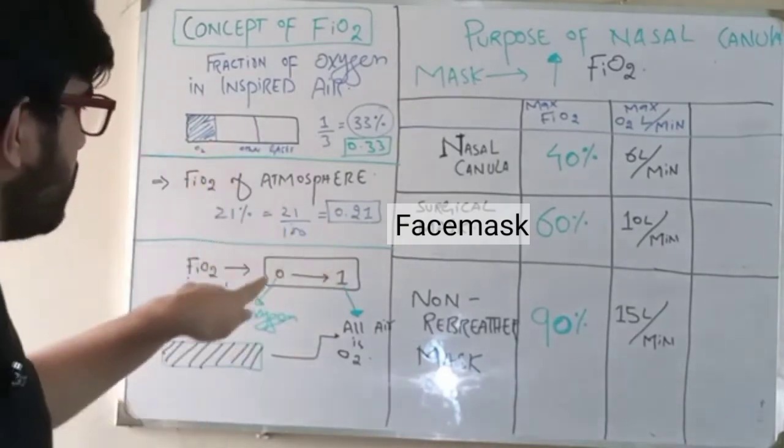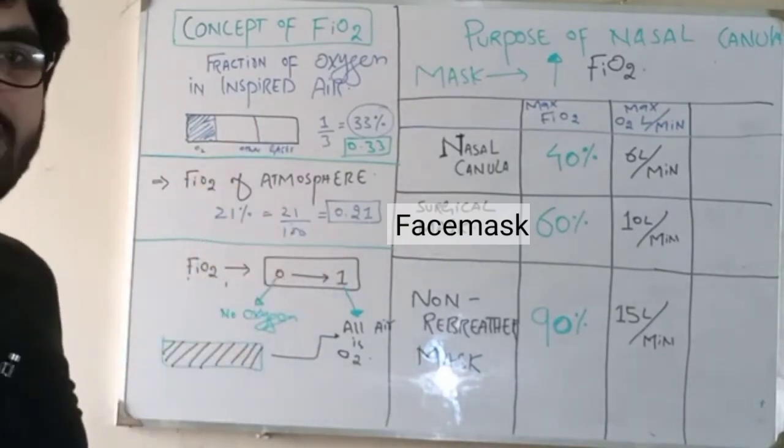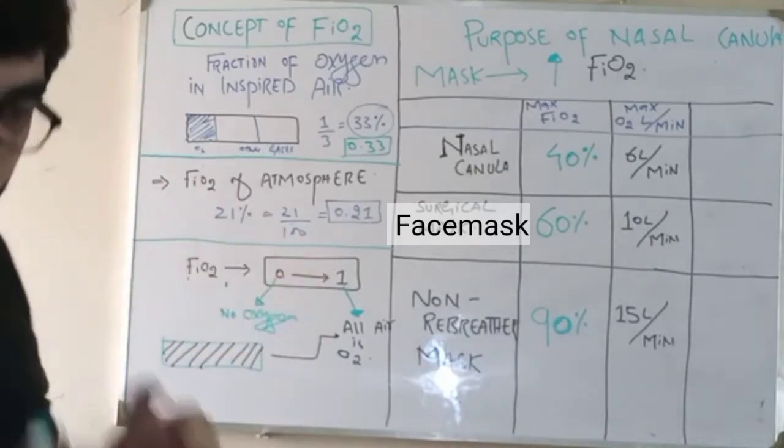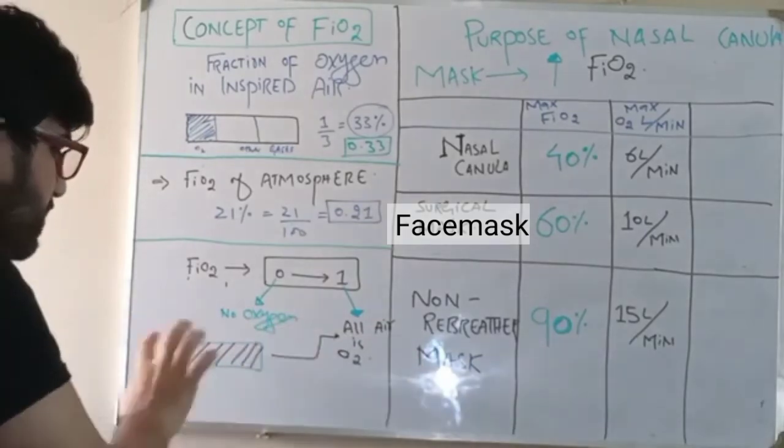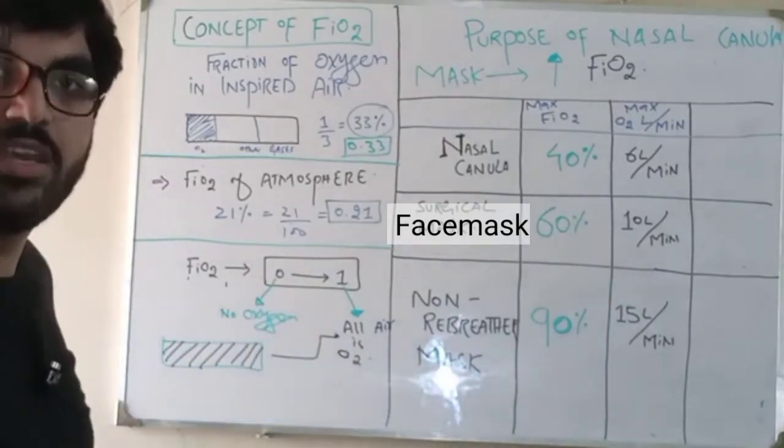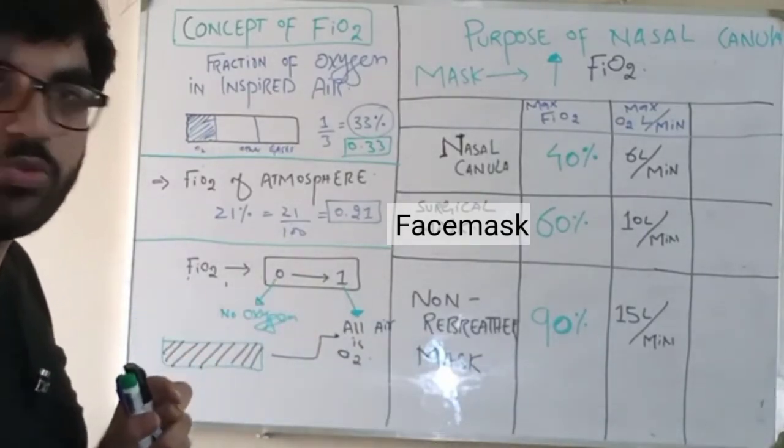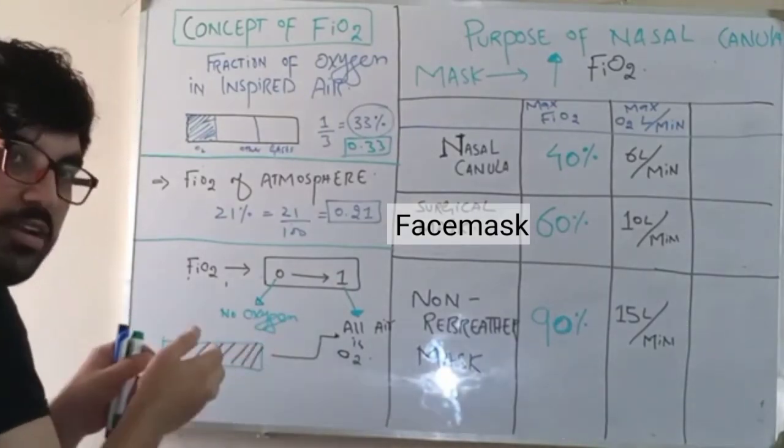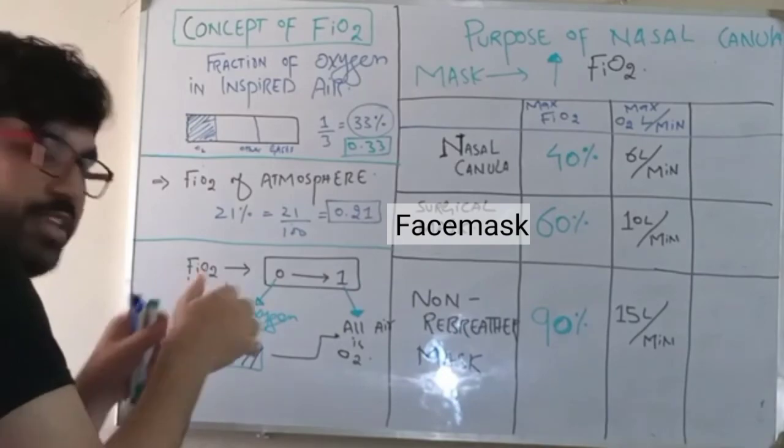Zero means there is no oxygen in the given air. One means the whole air consists of only oxygen. 50 percent would mean that 50 percent of the amount of air is oxygen.